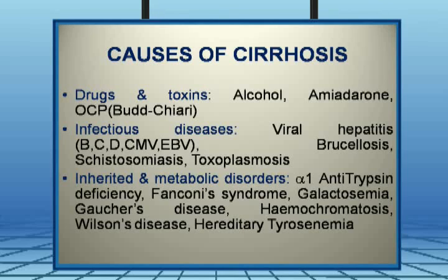Inherited disorders include alpha-1 antitrypsin deficiency, Fanconi syndrome, galactosemia, Gaucher's disease, hemochromatosis, Wilson's disease, and hereditary tyrosinemia. Of course, these are very uncommon in our setting.